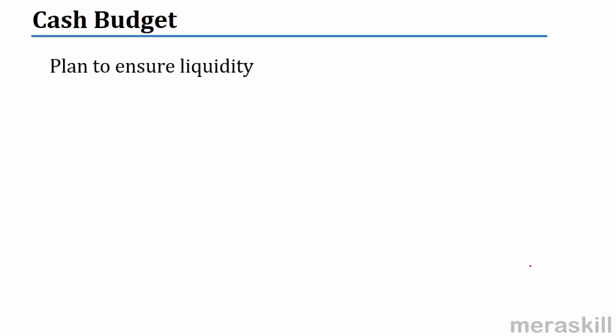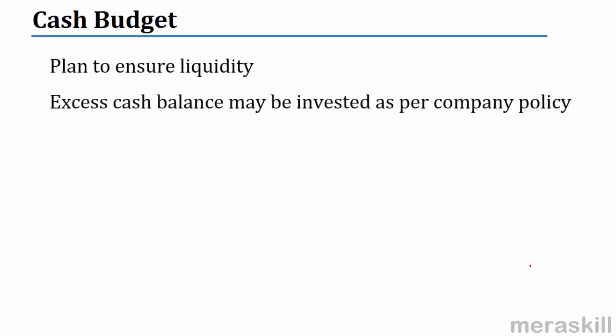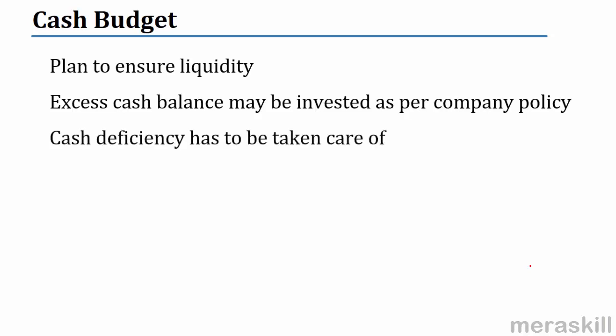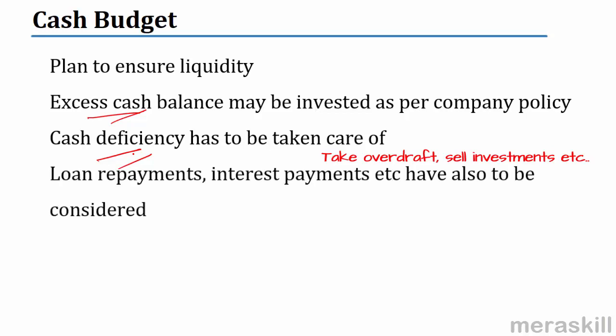Cash budget is a plan to ensure liquidity. Excess cash balance may be invested as per company policy. Just like you can have a shortfall, you could also end up with excess cash balance. If you have extra cash, it may go back into the business or into some other investments which will give you a return. Both excess cash and cash deficiency have to be taken care of. The cash budget helps us to know whether there is excess cash or cash deficiency and accordingly we make our arrangements — taking overdraft or selling investments to raise cash, or putting money in temporary investments when we have excess cash.